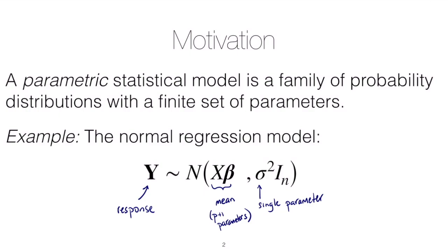The generalized linear models we've just studied — the Poisson and the binomial — are also examples of parametric models, because we specified the form of the model. For example, a binomial response with a linear predictor and a logit link function, and that form had finitely many parameters.